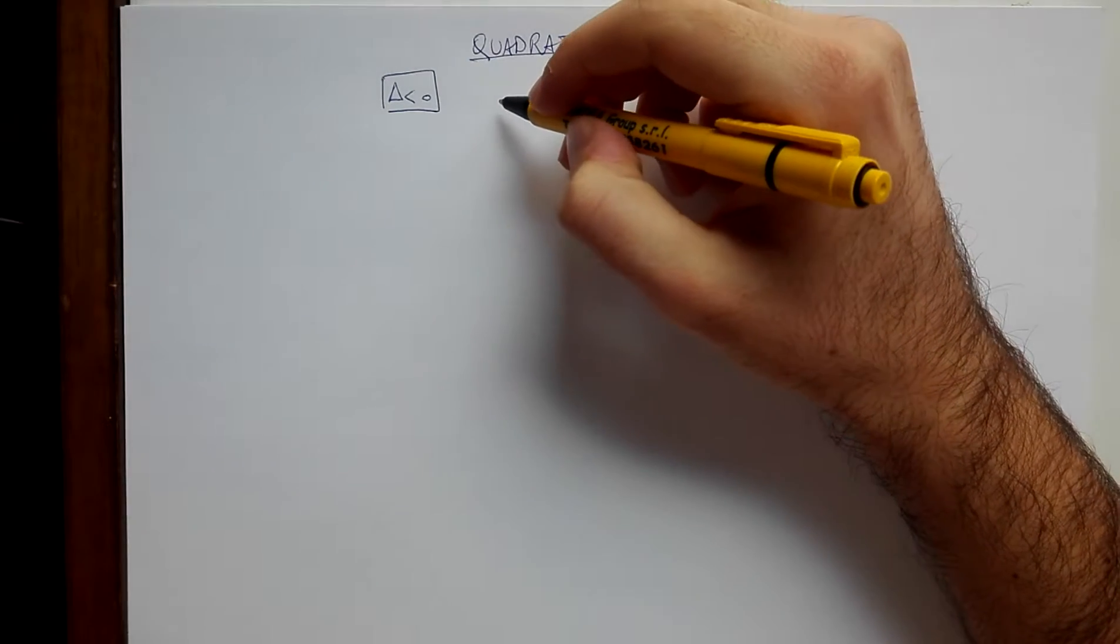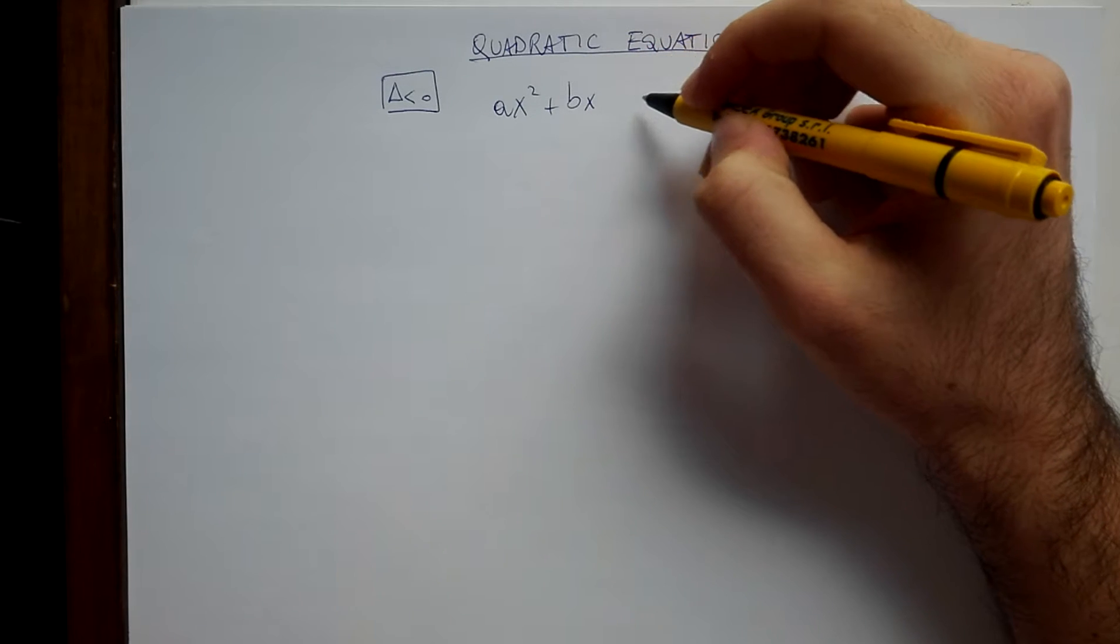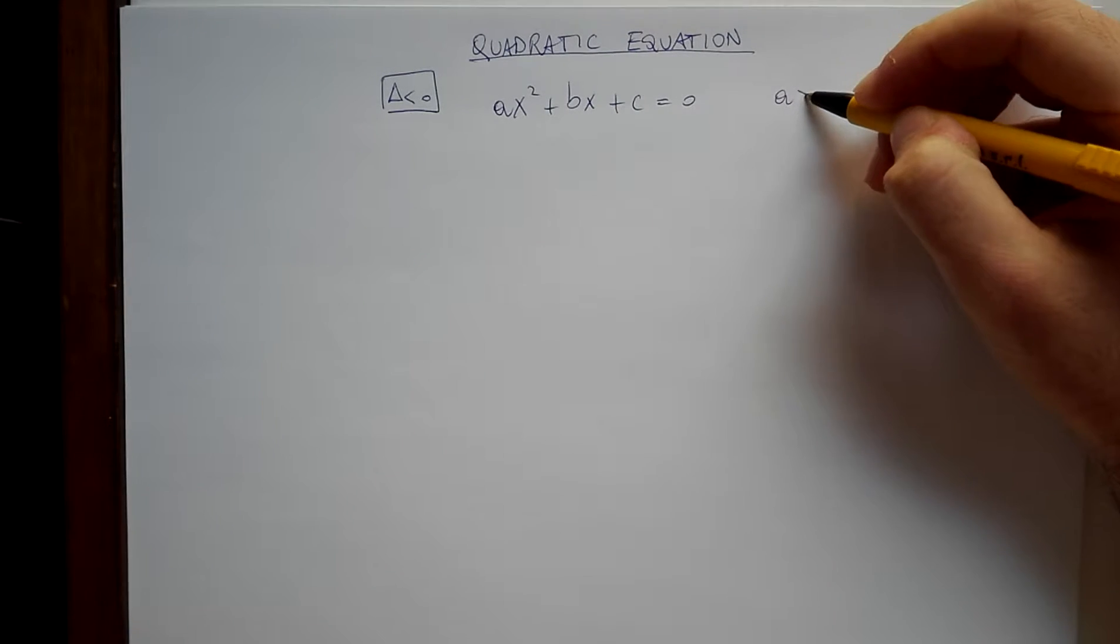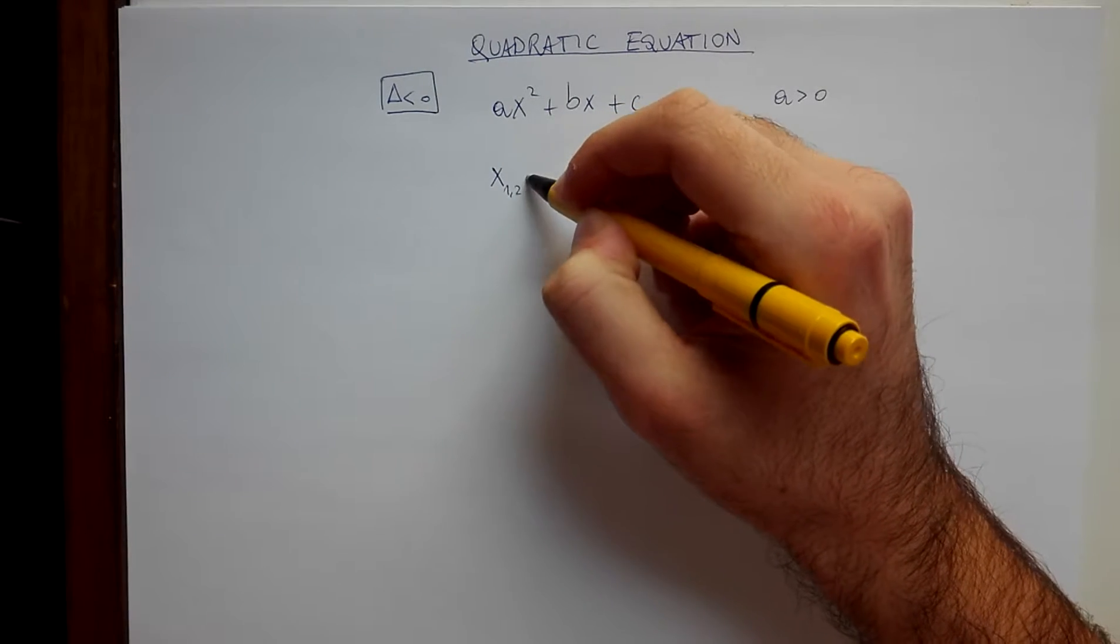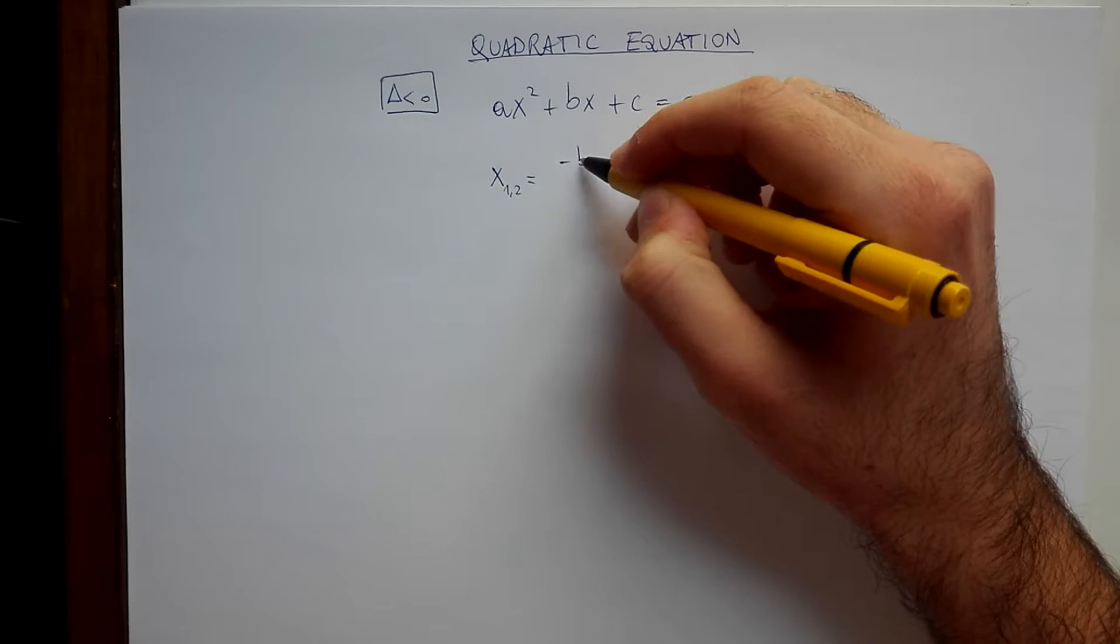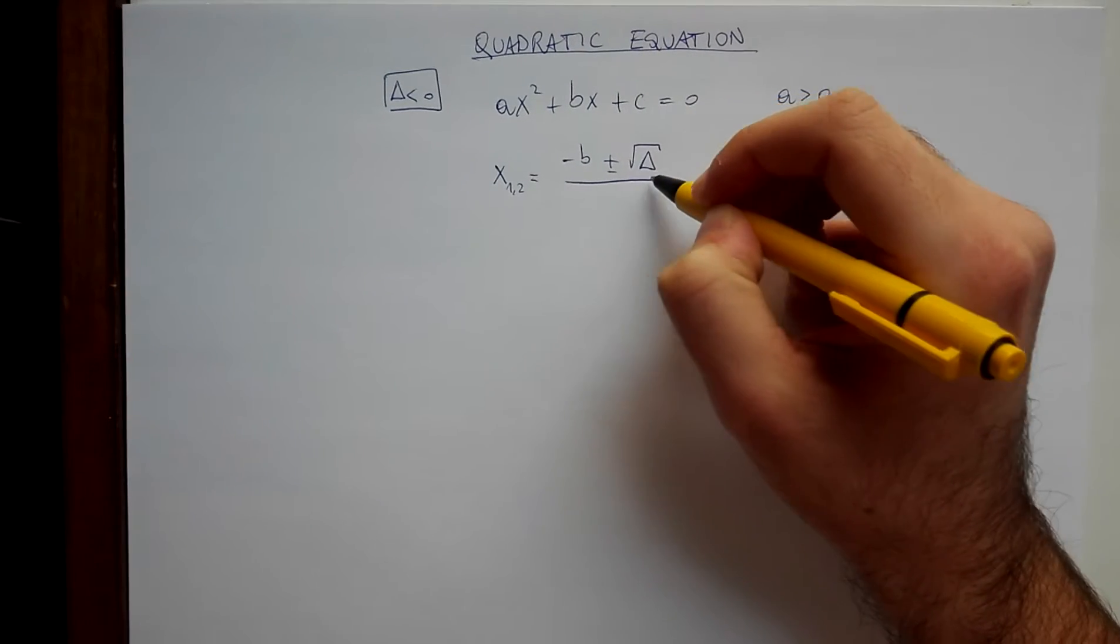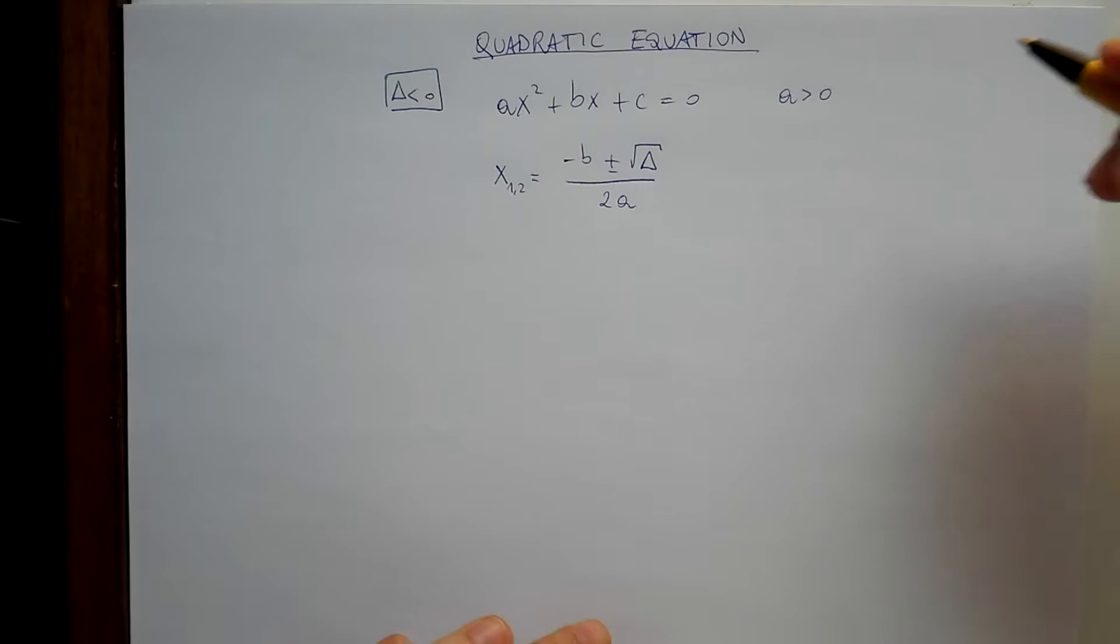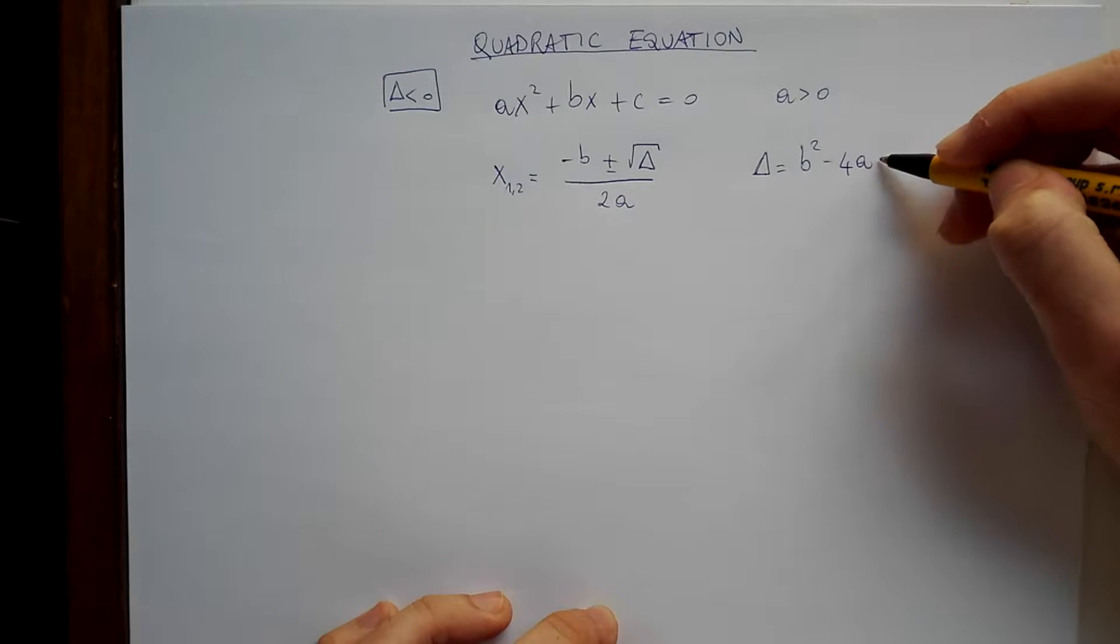So let's write the general formula, the general expression of a quadratic equation: ax squared plus bx plus c equals zero, with a greater than zero. We know that the two solutions are given by minus b plus or minus square root of delta divided by 2a, where delta is b squared minus 4ac.